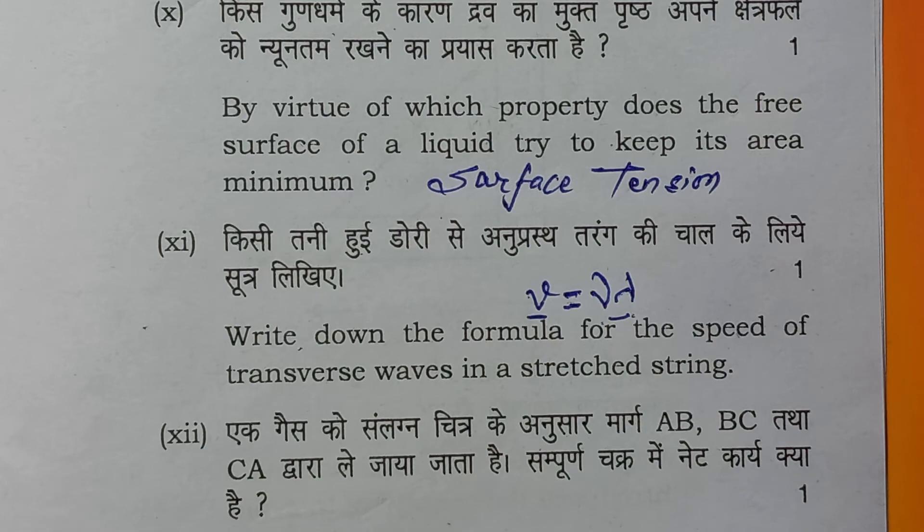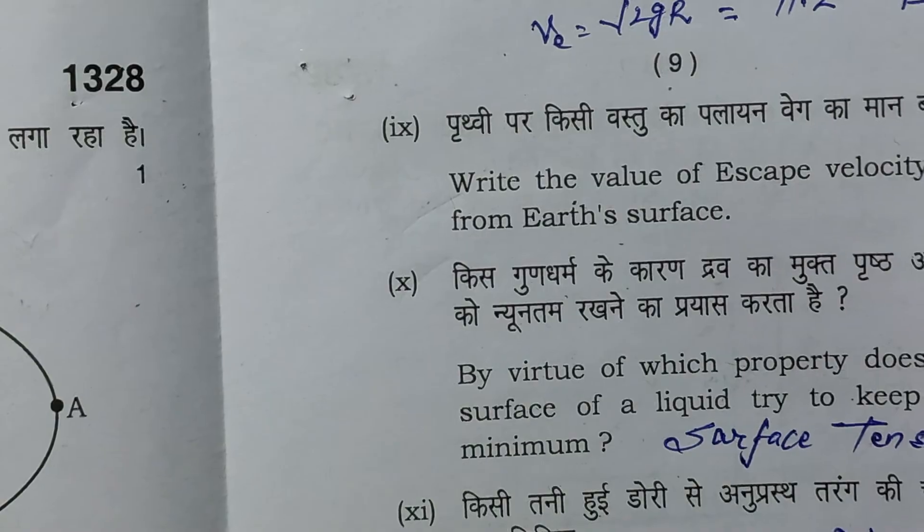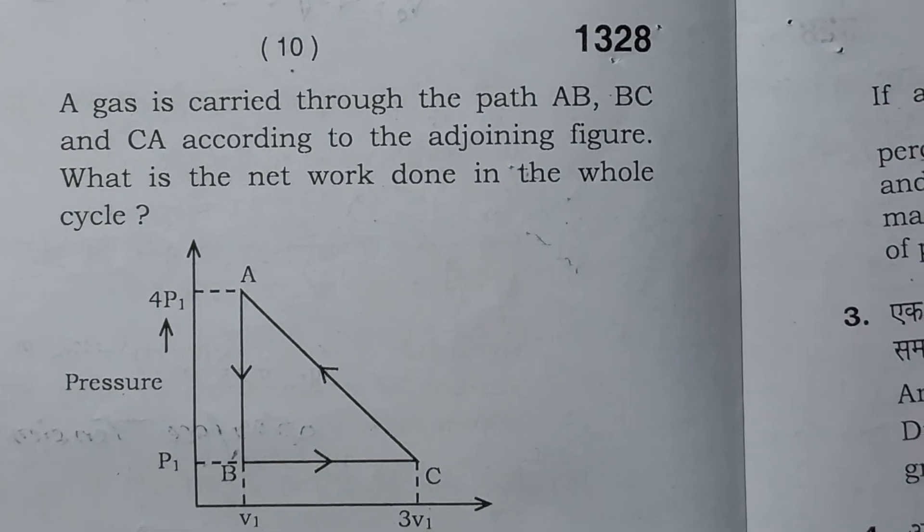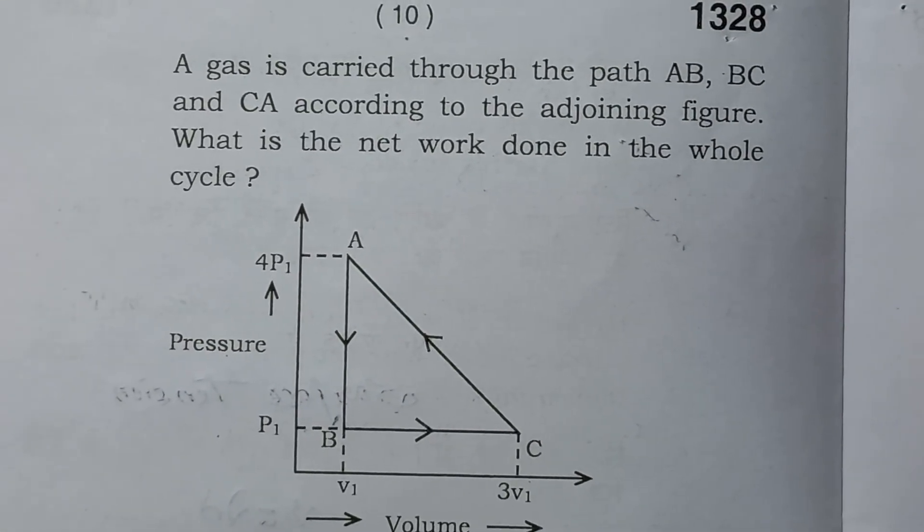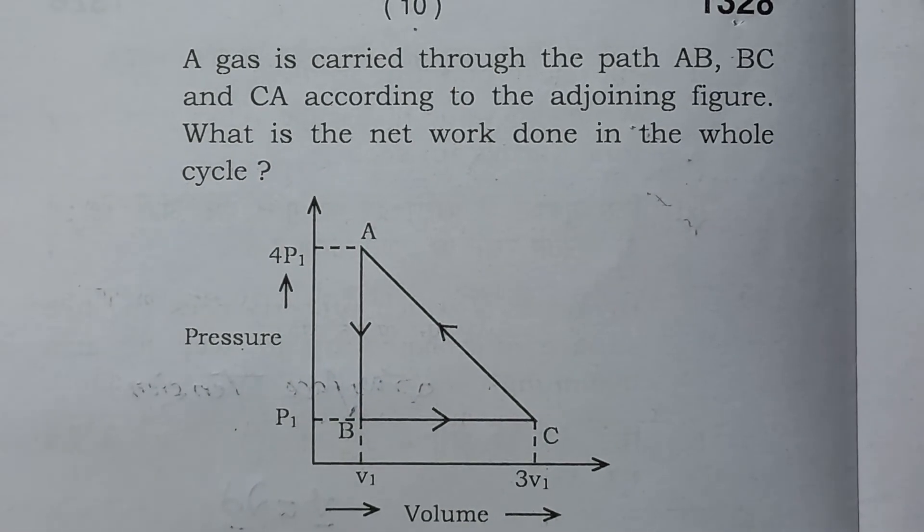Next question. A gas is carried through the path AB, BC, and CA according to the adjoining figure. You can see the figure.